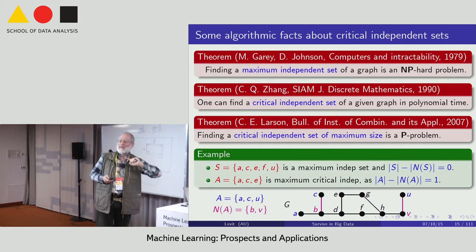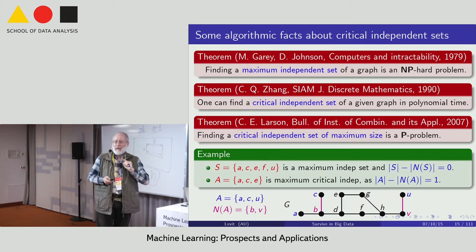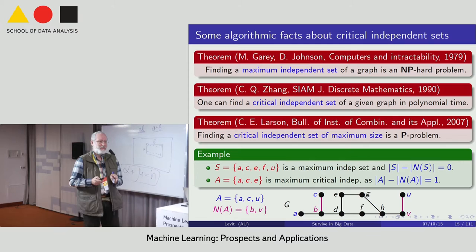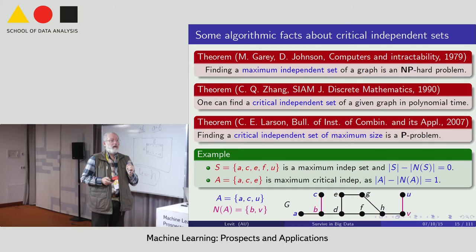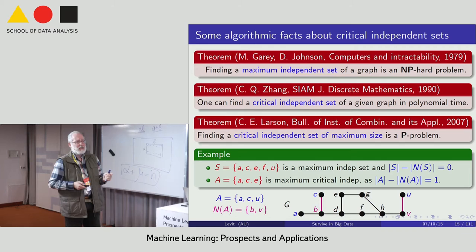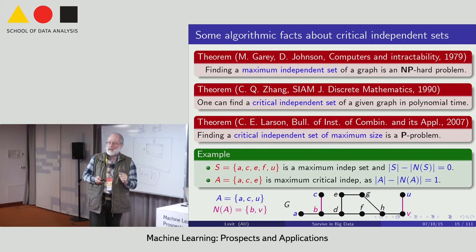Moreover, there are people in operations research using this for finding in real applications. I'm not a real... It doesn't belong to real applications, but there are people who use it. And what's the idea? As I told you before, core is the subset of every maximum independent set. A core is a pretty small set. But there is a theorem, you'll see it now, that every critical independent set is a subset of some maximum independent set. And it gives us some kind of hope.